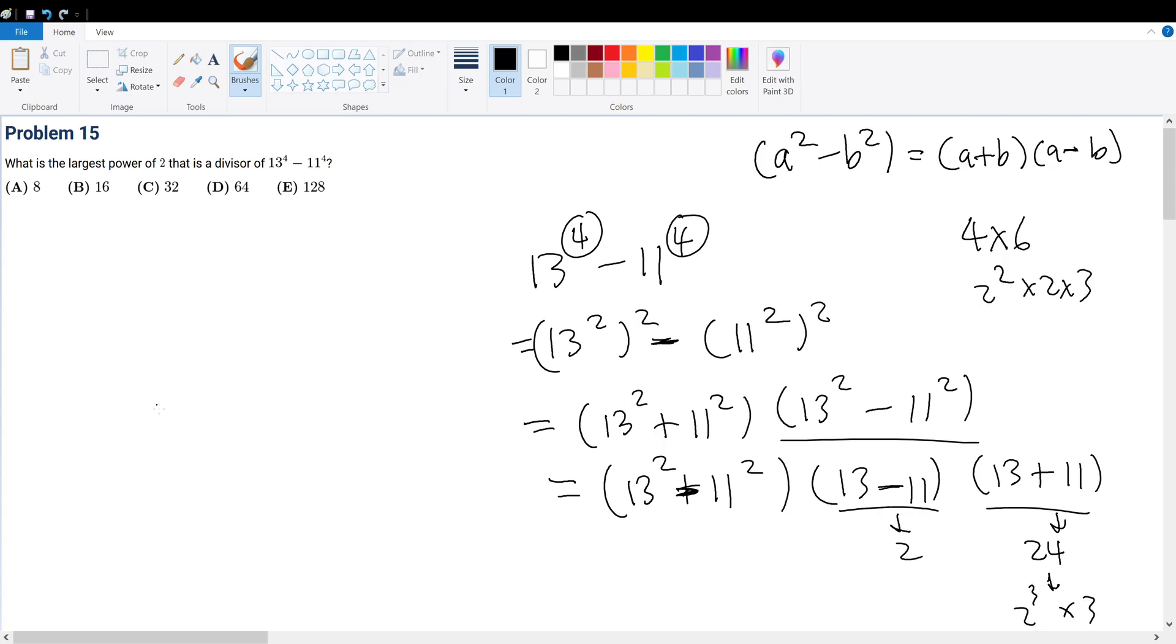So we can factor this ultimately into 2 to the 3 times 2 times what? Well, there has to be something that comes out from this, right? What is 13 squared? That's 169. What is 11 squared? That's 121.